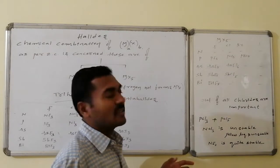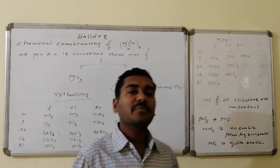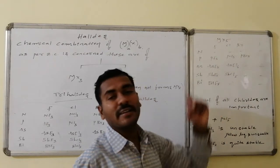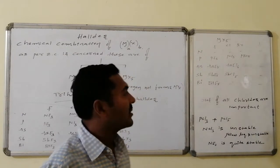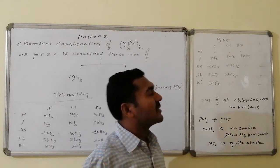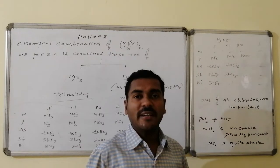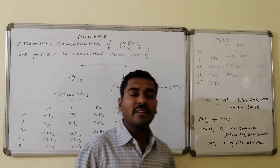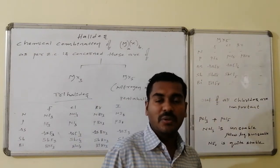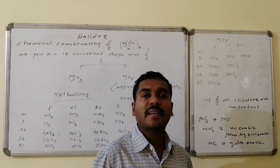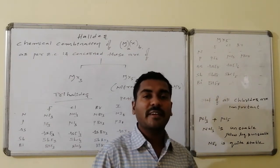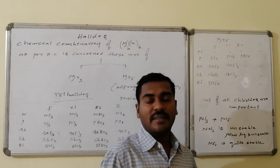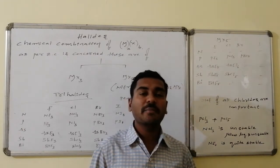Pentahalides — that is, five halogen atoms in chemical combination with the 5A group elements — are generally indicated by MX5, where X stands for halogen atom, from fluorides to chlorides to bromides and iodides. Nitrogen is not having d-orbitals. Hence it cannot promote electrons to the d-orbital, and it just shows only three as its valency, not five. So there is no pentahalide for nitrogen.